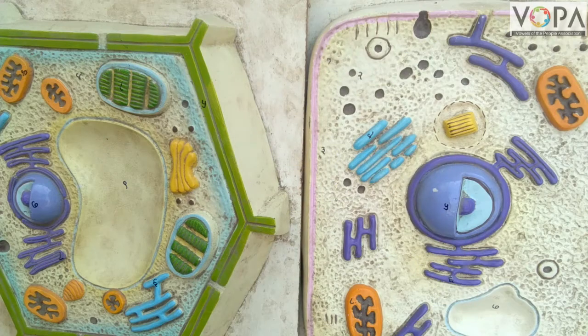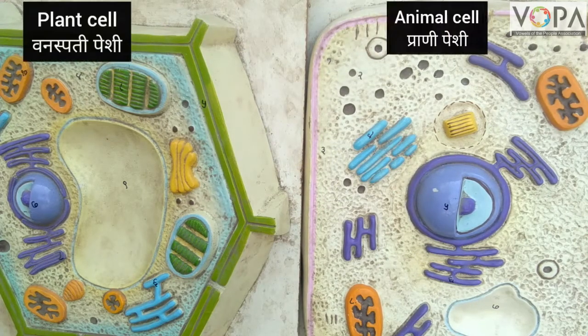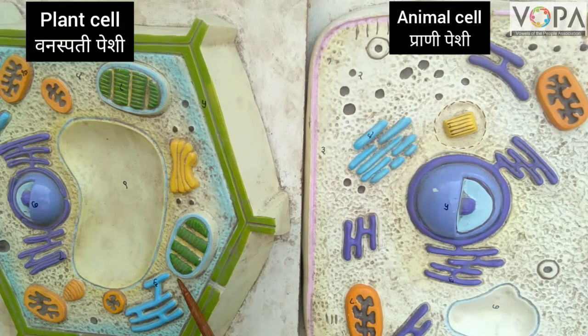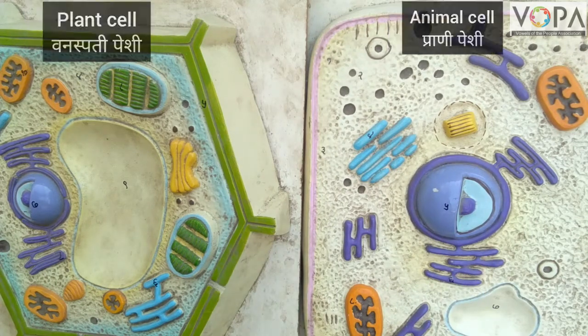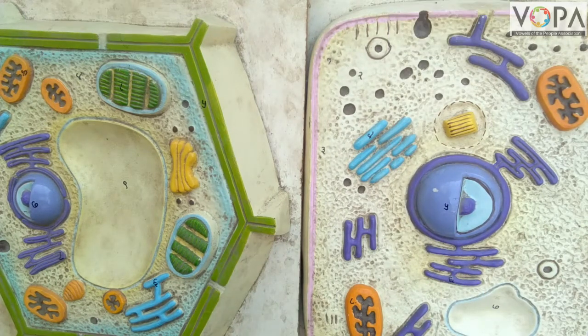Hi dear students, now we will learn about the plant cell and animal cell — Vanaspati Peshi and Prani Peshi.